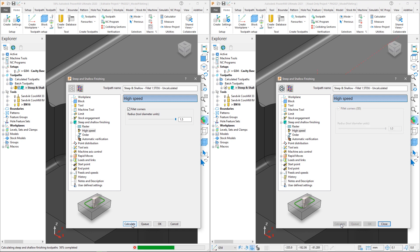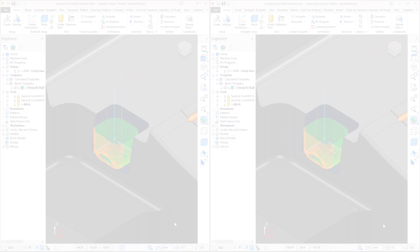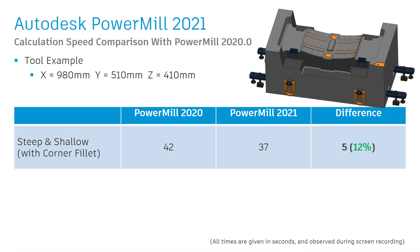The result is that PowerMill 2021 finishes the toolpath calculation first. Comparing the calculation times, we can see that PowerMill 2020 took 42 seconds to calculate, whereas PowerMill 2021 took 5 seconds less to perform the same process at 37 seconds, resulting in a 12% saving in time.